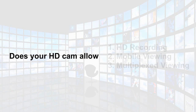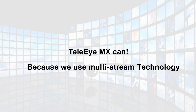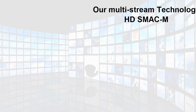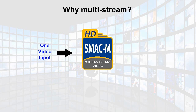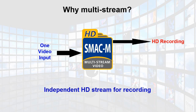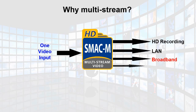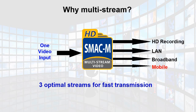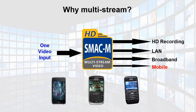Do your MX cameras record in high-definition, give you mobile and multiplexed viewing? TeleEye's MX range can, because we use multi-stream technology. HD SMAC-M is the world's first multi-stream high-definition video coder. It makes IP and mobile viewing possible. The first stream is built for high-definition video recording. The other streams are used for fast transmission via LAN, broadband network, and mobile phone viewing. You can use an iPhone, a Blackberry, and other smartphones to get live video anywhere and anytime.